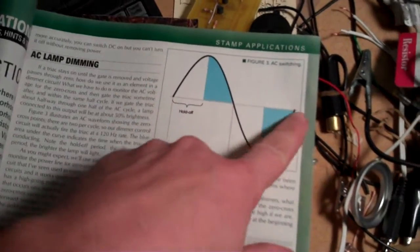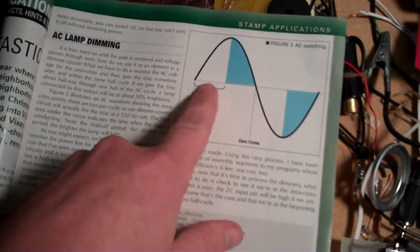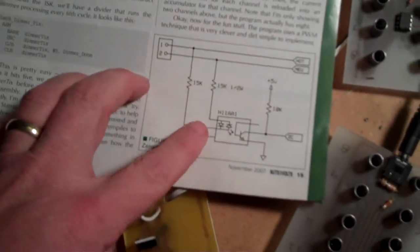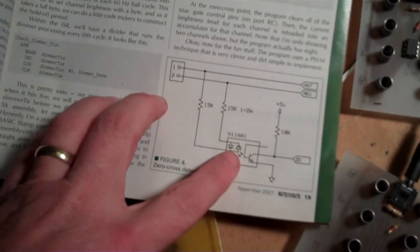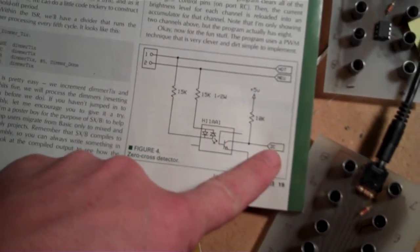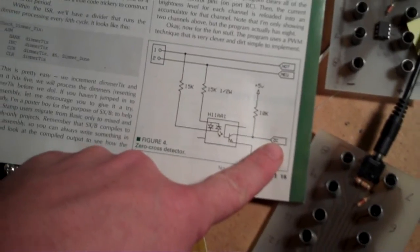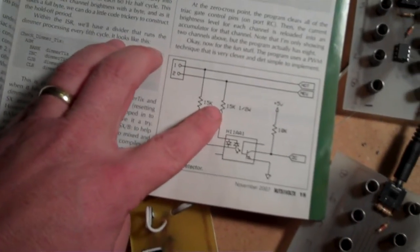It's where the alternation of the frequency is neither positive or negative, and they're using an H11AA1 optocoupler to give a peak on this pin here when you reach zero cross. It shows two 15k resistors.